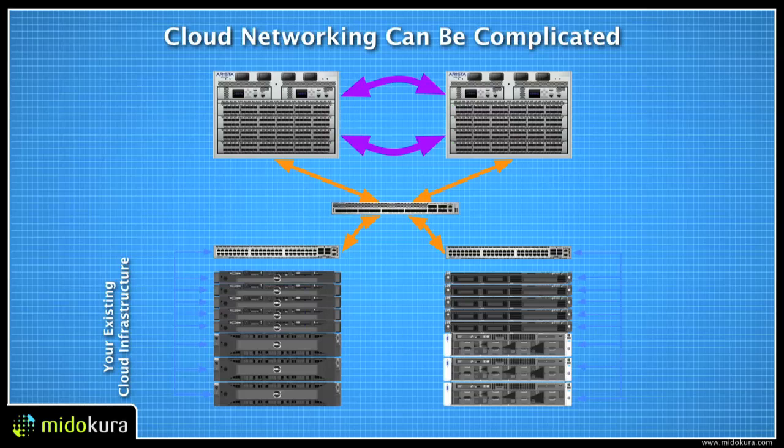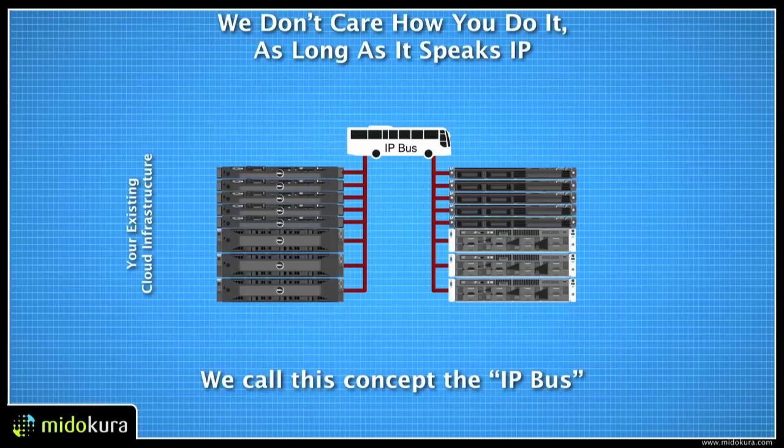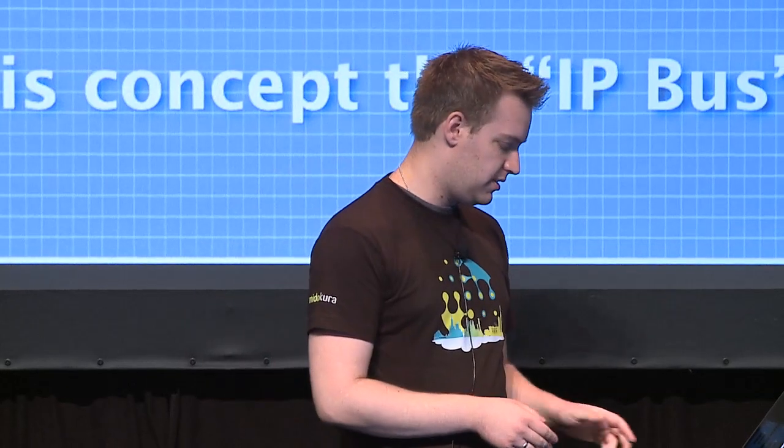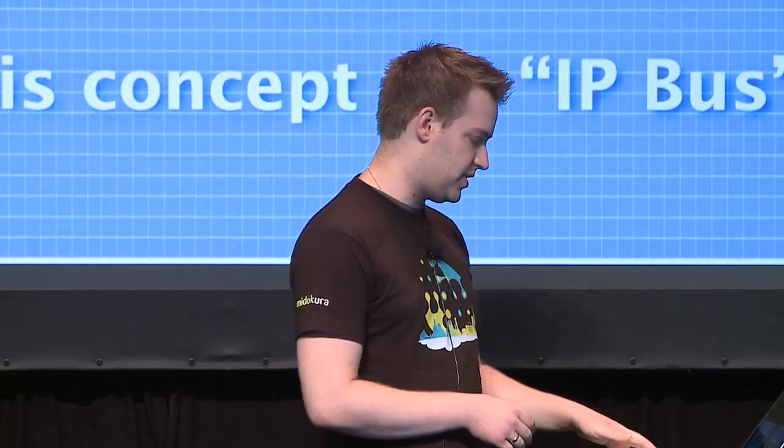Where we come in is we virtualize layer networks two through four and provide a completely virtualized topology that's independent of the physical topology of your network. We colloquially call this the IP bus. As long as there is IP connectivity between all of your hypervisors, we don't care what the topology of your network or connection looks like. Everything else is completely virtualized between all of our agents running on your hypervisors.